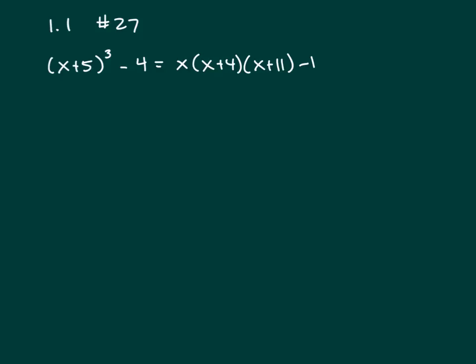x plus 5 cubed is x plus 5 times x plus 5 to the second. x plus 5, x plus 5, x plus 5. So bring down the x plus 5. Now let's square this binomial.